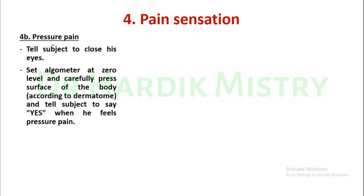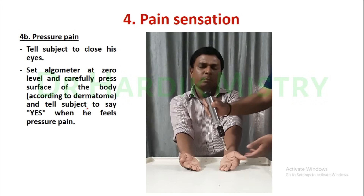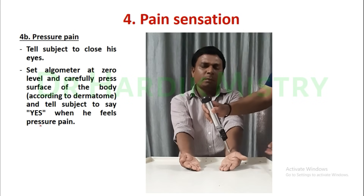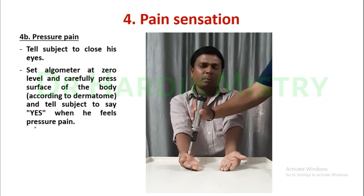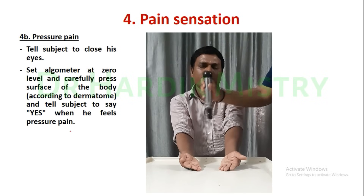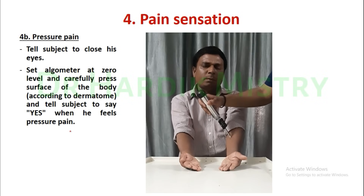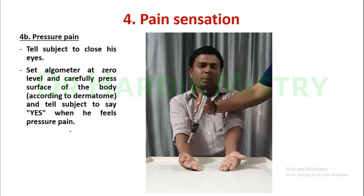Now the next is pressure pain. Tell the subject to close his eyes. Set the algometer at zero level and carefully press the surface of the body according to the dermatomes. Tell the subject to say yes when he feels the pressure pain. This is how you check pressure pain in the pain sensation.